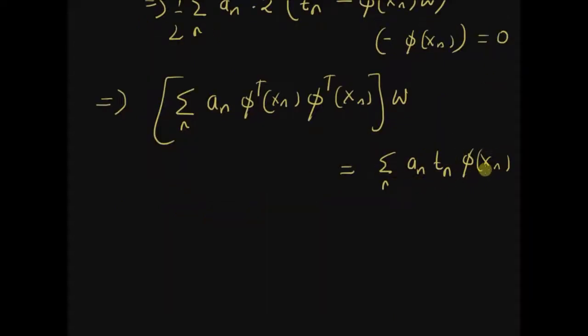Note that the sum on the right hand side will still result in a vector with dimensions same as phi(x_n). Therefore,